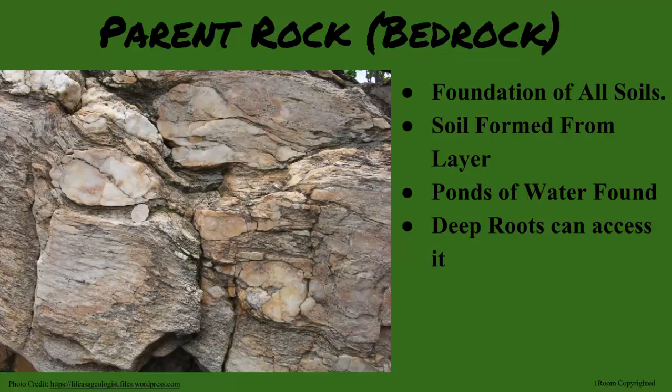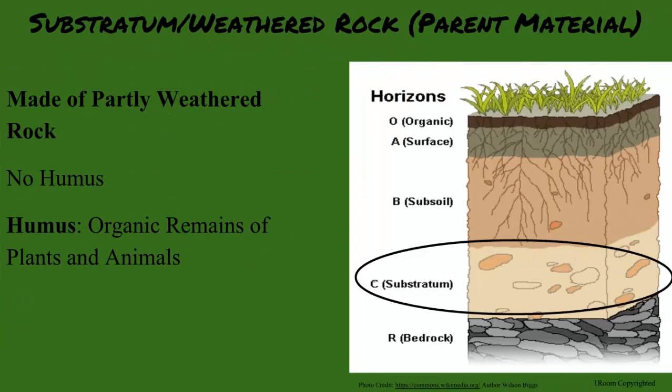And the next layer up is the substratum, or weathered rock layer. It is partly made of weathered rock with no humus. Humus? Humus is the organic remains of plants and animals. But that's a subject for another day. Now, quit interrupting.